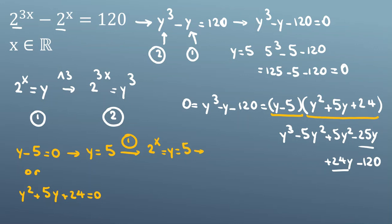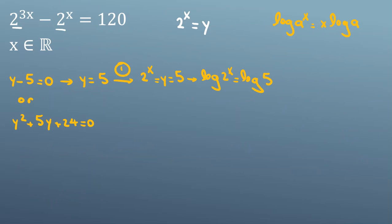Taking log from both sides: log(2^x) = log(5). Using the logarithm rule, if you have log(a^x), you can take x in front. Applying that here: x·log(2) = log(5). When x is in the power, you take a log from both sides.